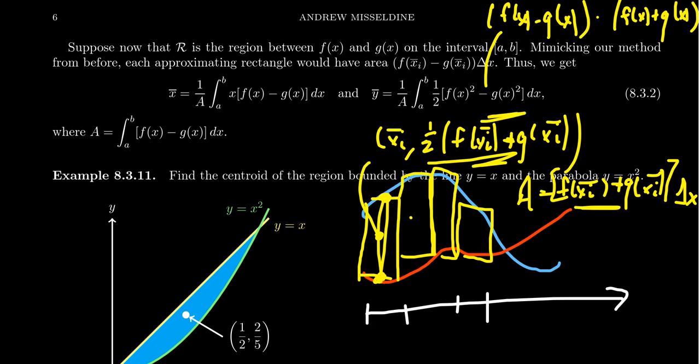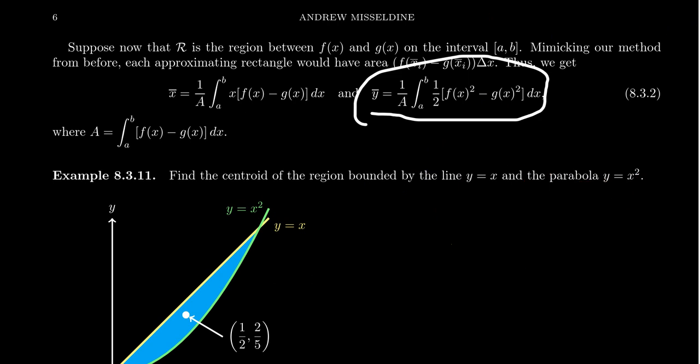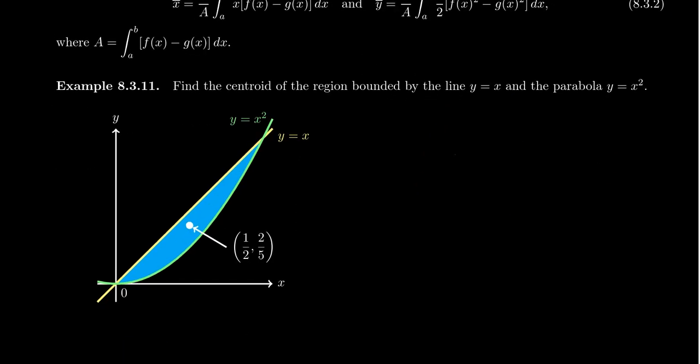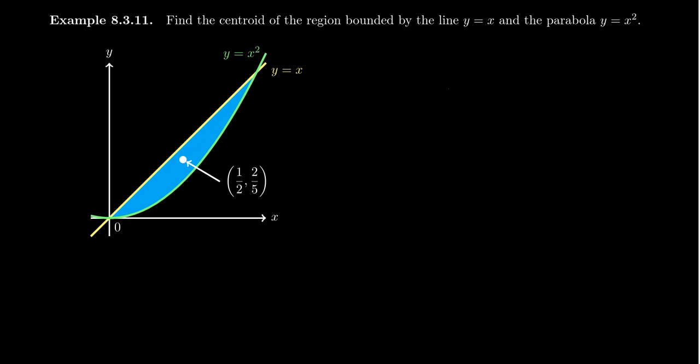Now let's get to a specific example. Let's find the centroid of the region bounded by the line y equals x and the parabola y equals x squared. So we see the parabola in green in the illustration below, and the line y equals x is illustrated in yellow right there.